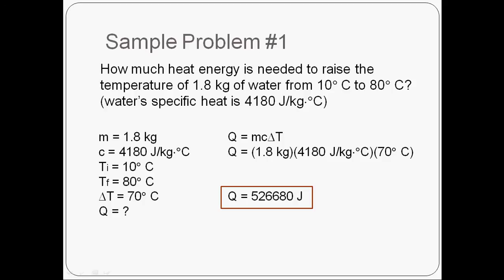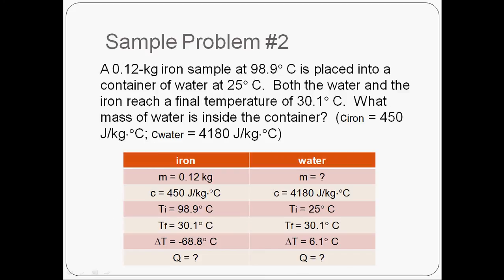Now another problem. This one's a little bit more challenging, but stay with me. We've got a 0.12 kilogram sample of iron. It's really hot, 98.9 degrees Celsius. We stick it into a container of water that's 25 degrees Celsius. They both then come to a final equilibrium temperature of 30.1 degrees. We want to figure out the mass of water that was inside that container. Now we can do this based just on the information that we've got.